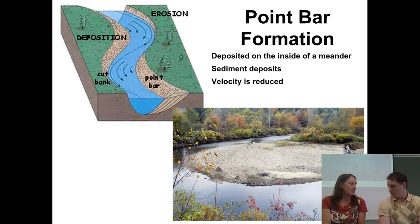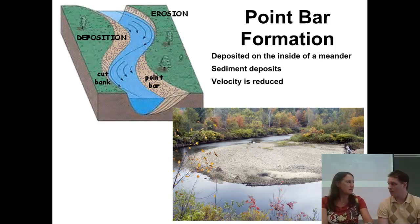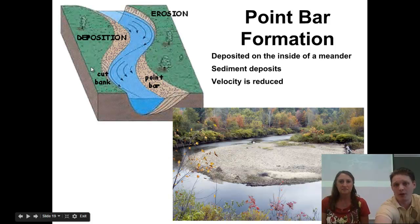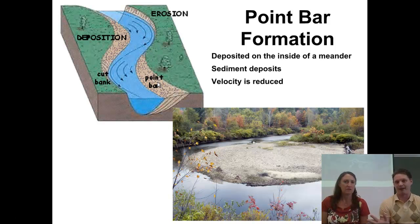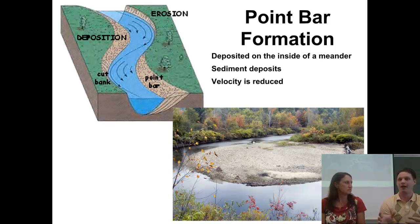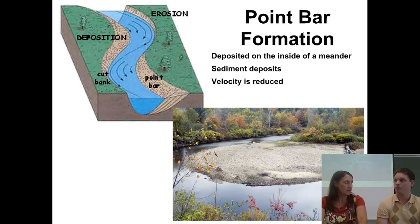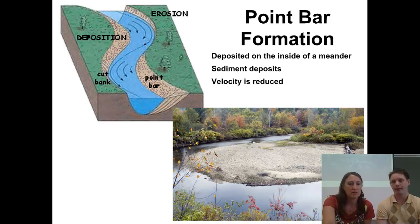On the inside of the meander, where the velocity of the river is very slow, it may be slow enough that some of the sediment being carried downstream is actually going to be deposited. So on one side we have the cut bank, and opposite of that we have the point bar. Just thinking about the Crack the Whip game — the person in the middle or close to it doesn't have to move very far or fast. The outside of the meander has the cut bank, and the inside of the curve has the point bar deposit.